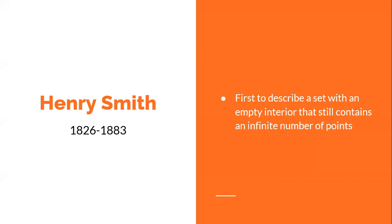Interestingly enough, the Cantor set as we know it wasn't the first of its kind. Henry Smith discovered, or at least proposed, the first idea similar to a Cantor set in about 1874. He did not actually propose the exact Cantor set that we now know, and it wasn't published until 1883, when George Cantor himself published it.